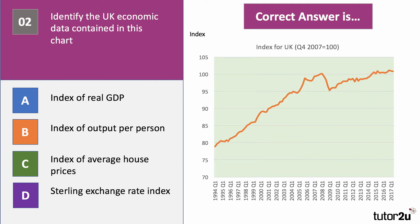On to chart number two: identify the UK data contained in this chart. This chart is an index using Quarter 4 2007 as the base value. Choose A, B, C, or D — which index is being shown here? Press pause, have a go at the data, then press play when you want the answer.